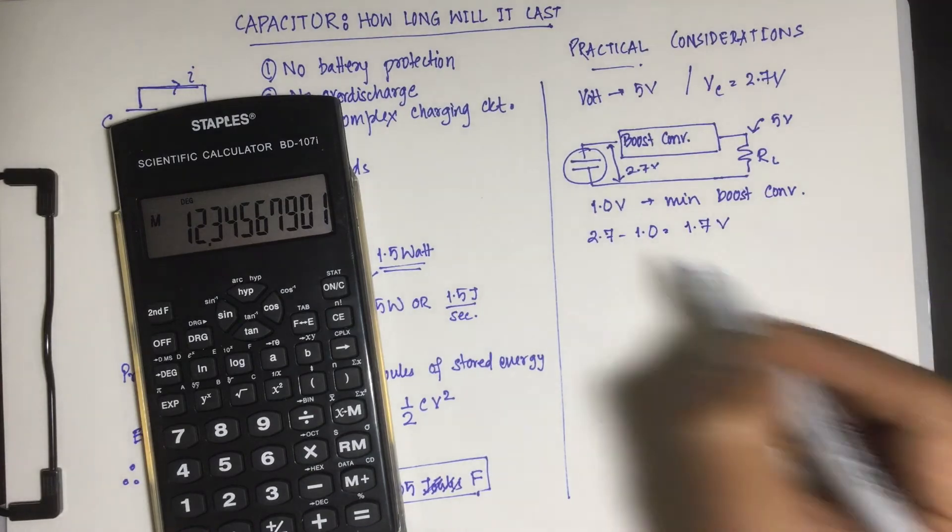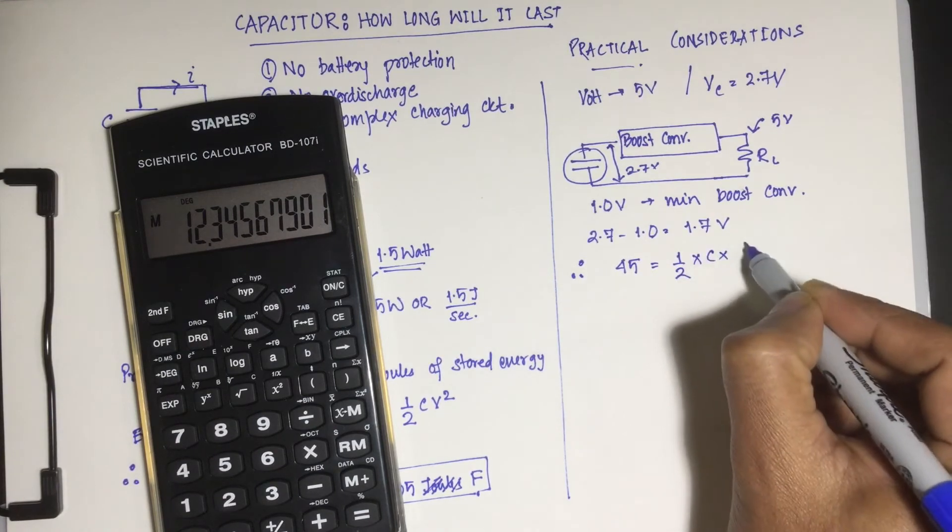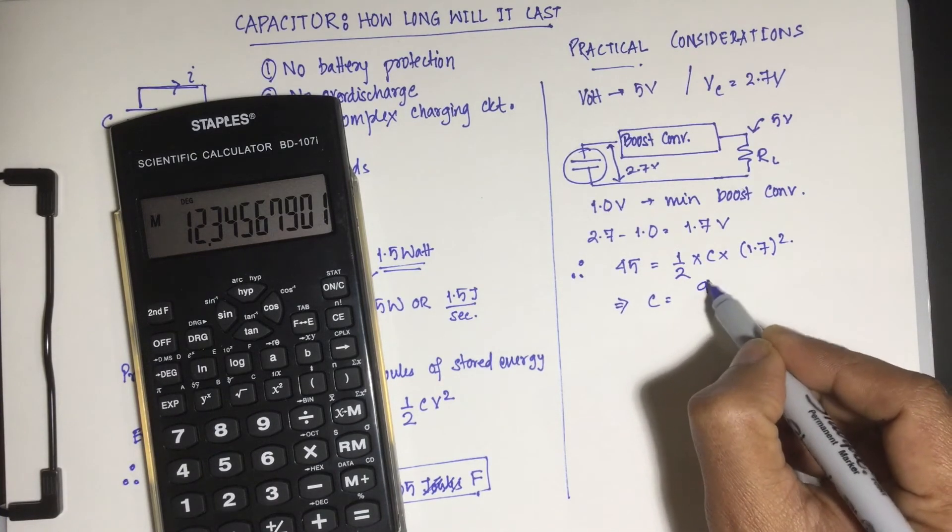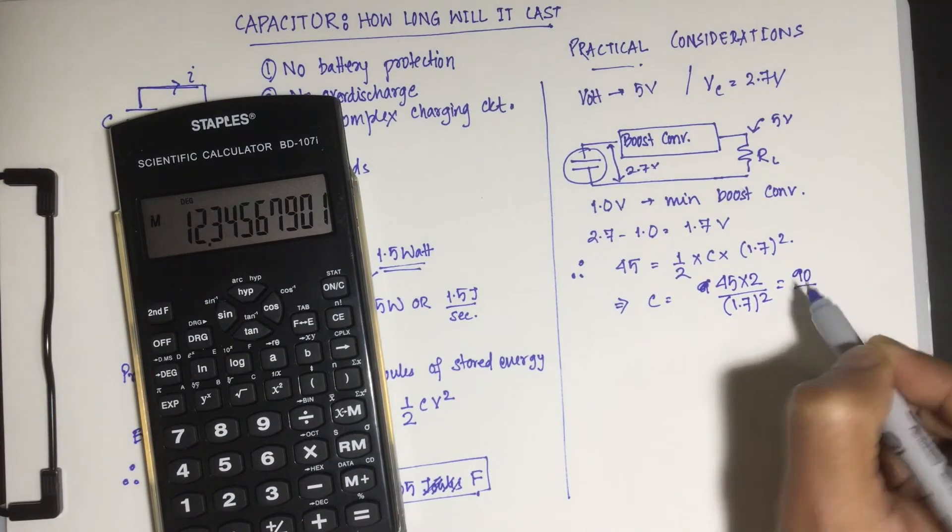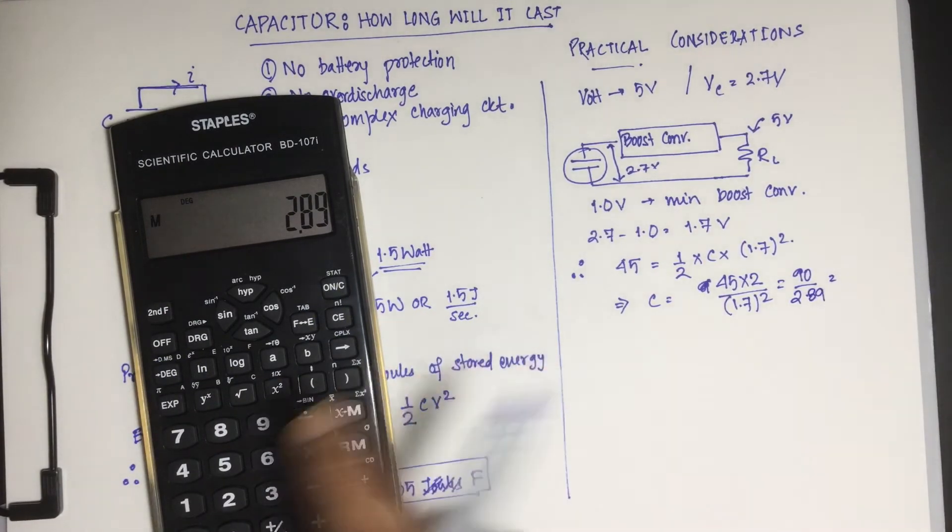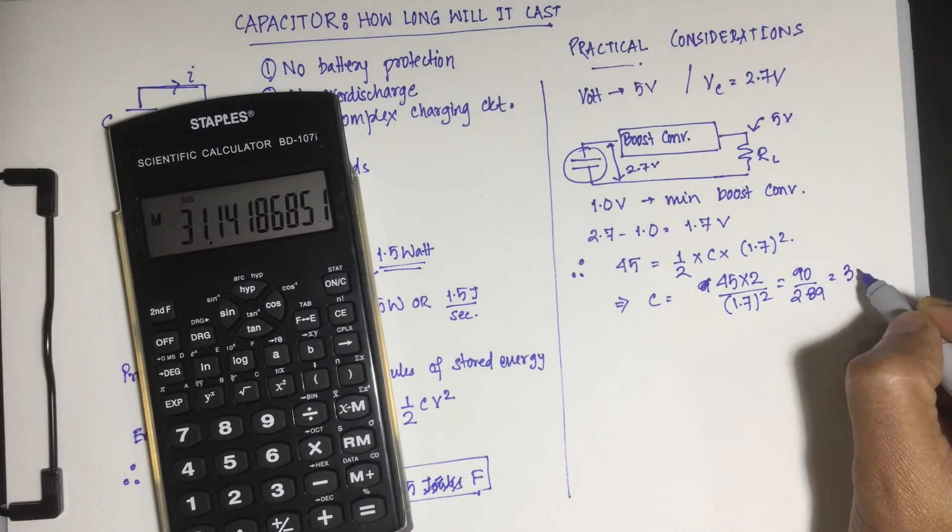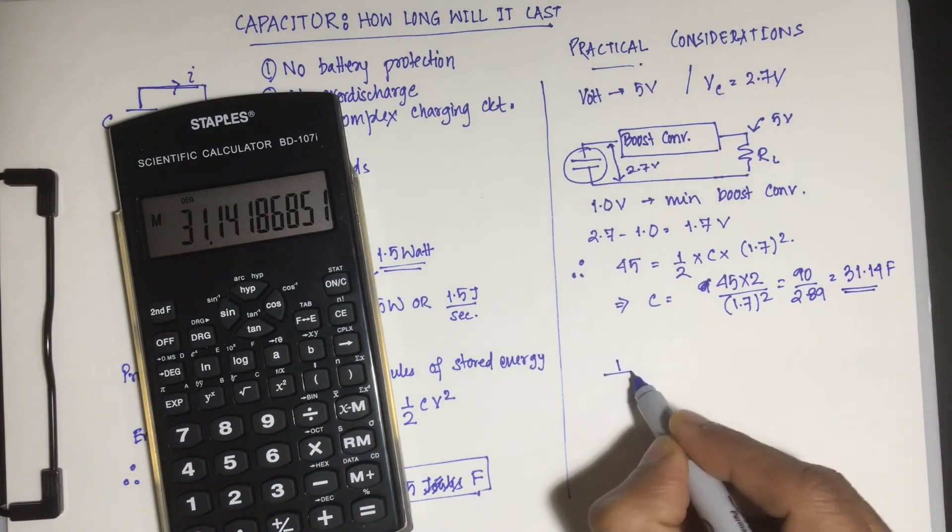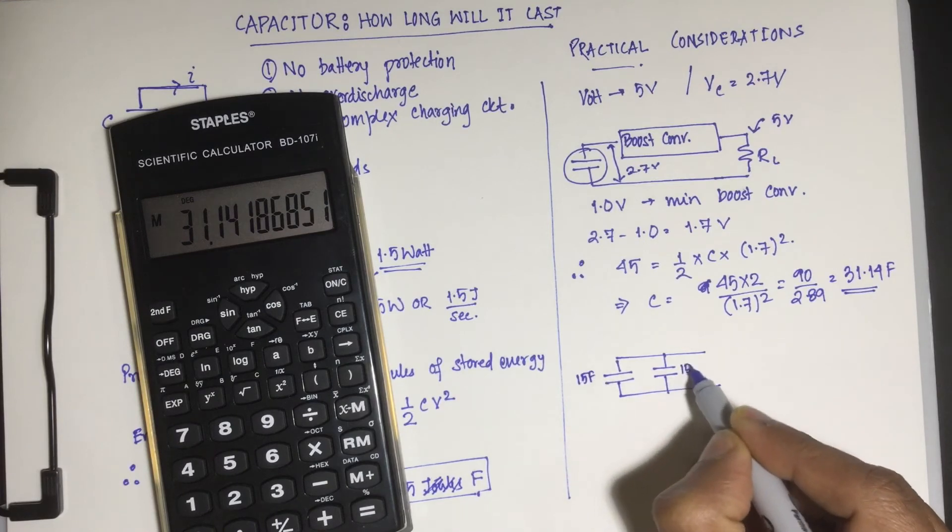So we can assume that it's charged to 1.7 volts actually. So now energy stored, 45 joules, has to be recomputed for capacitance value. So 45 into 2 by 1.7 squared, that's about 90 divided by 2.89, that's about 31.14. So that's the real value of capacitance that we require, 31.14 farads. What we can do is we can have two capacitances of 15 farads each in parallel that gives us about 30 farads.